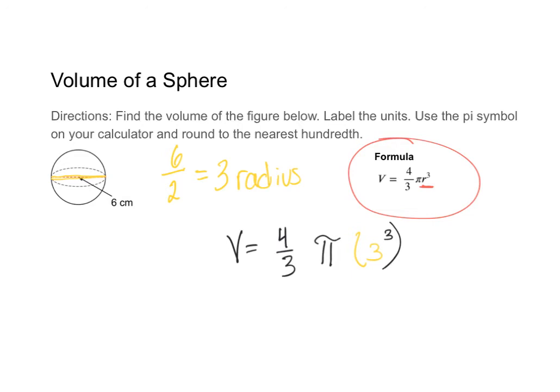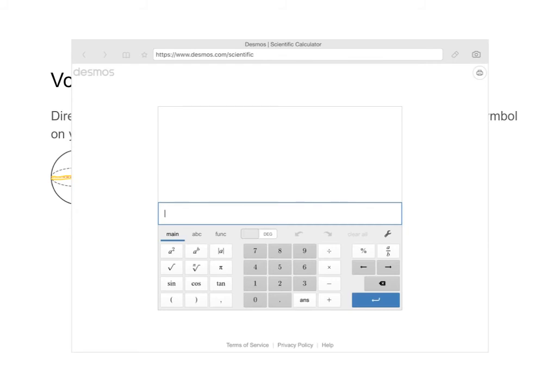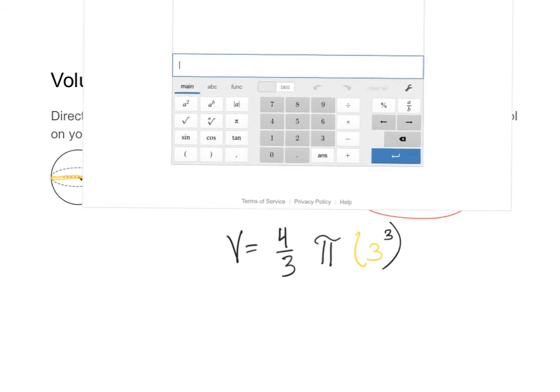Now because you have a fraction you have to be careful on how you put the fraction into your calculator. So I'm going to go to the Desmos calculator once again. I'm going to take four thirds and put that in parentheses—four divided by three—times pi, and then times, in parentheses again, three to the third power. I'm going to click on a to the b power so I can pick whatever number I want to be in the exponents, and then close parentheses.